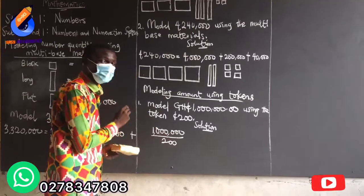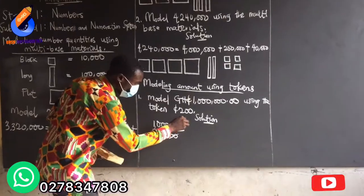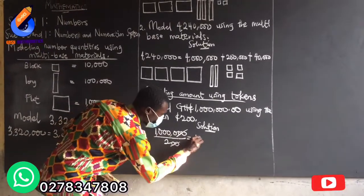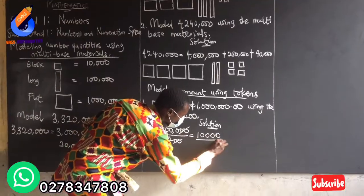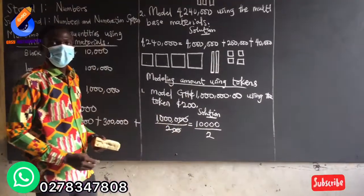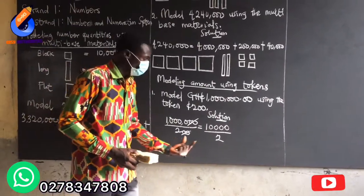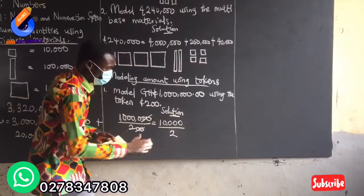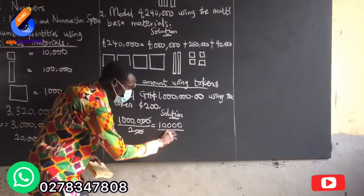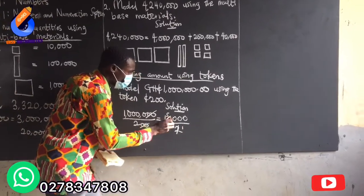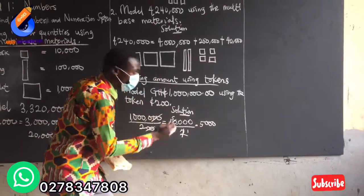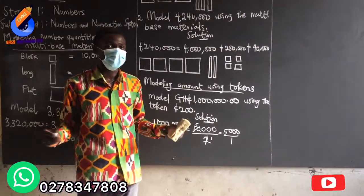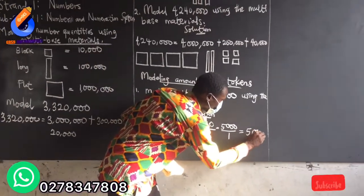So I'm going to divide 1,000,000 by 200. I have 6 zeros at the top and 2 zeros at the bottom. These 2 zeros cancel, leaving 1 with 4 zeros, divided by 2. Can 2 go into 10,000? Yes. 2 goes into 10 five times, giving me 5,000. So my final answer is 5,000.